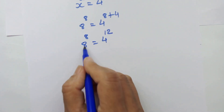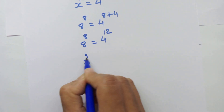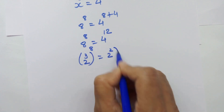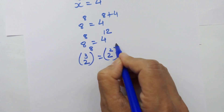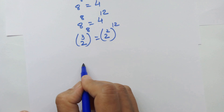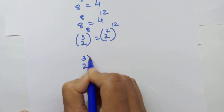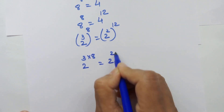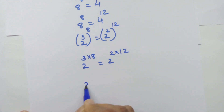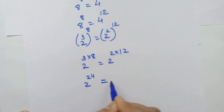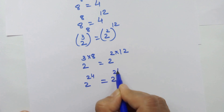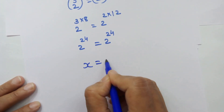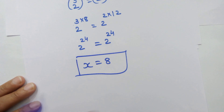Now 8 is 2 cubed and 4 is 2 squared, so we can rewrite both sides. We get 2 raised to 3 times 8 is equal to 2 raised to 24, giving us 2 raised to 24 is equal to 2 raised to 24. So x equal to 8 is the correct answer.